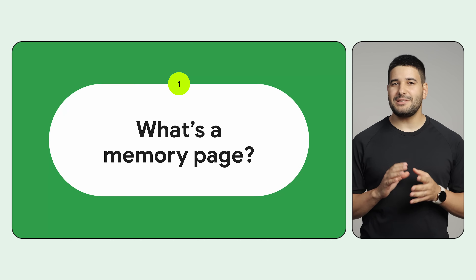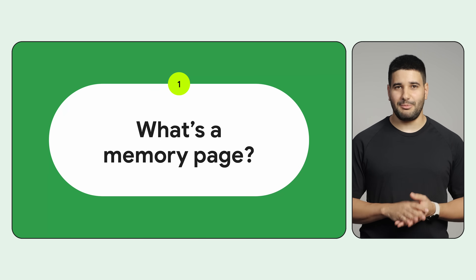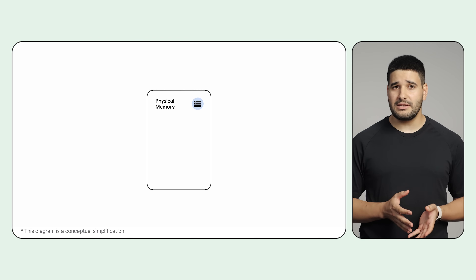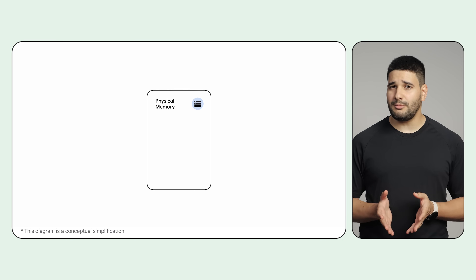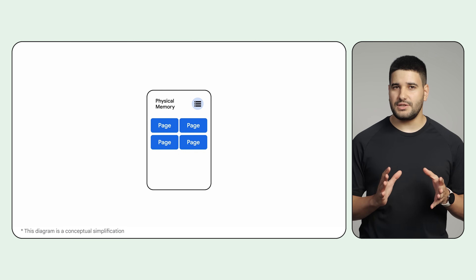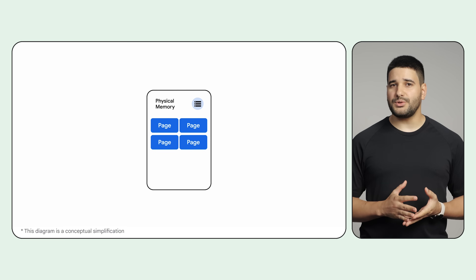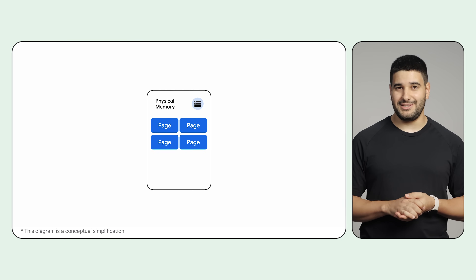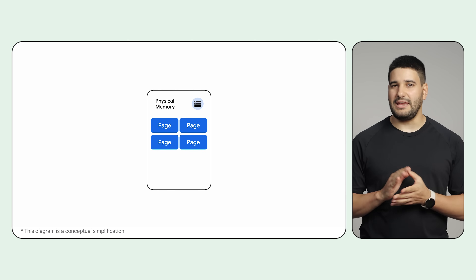But first, let me explain what a memory page is and how a program accesses memory. When your app reads or writes variables, it stores them in a volatile memory known commonly as physical memory or RAM. To simplify its organization and reduce wasted space, data is stored in a fixed size block. We call this block a memory page, and on Android, historically, they are 4 KB each.